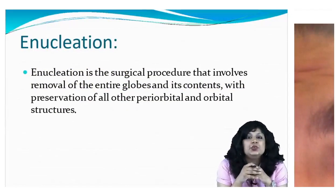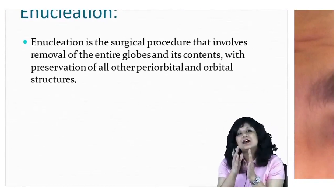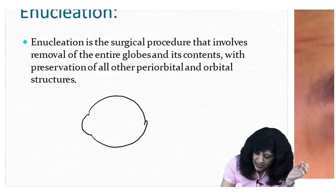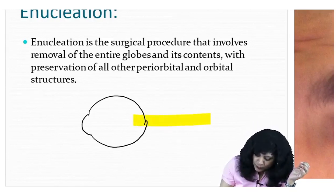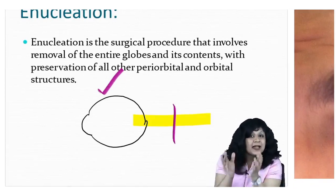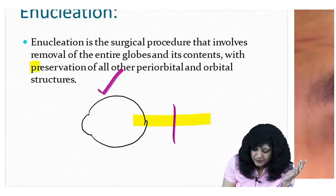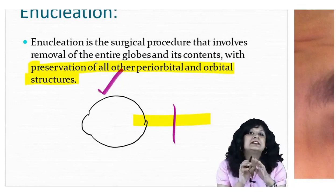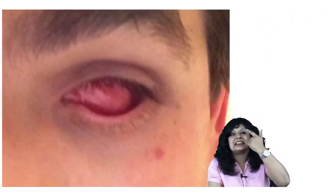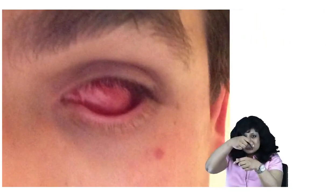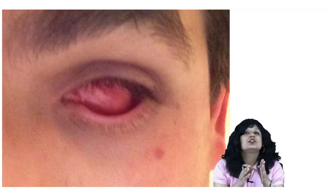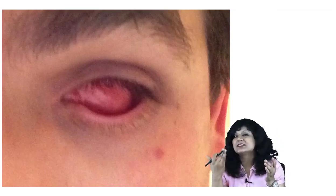Now, enucleation is a procedure where we remove the whole eyeball, cutting a part of the optic nerve, but the orbital contents remain intact — there is preservation of all periorbital and orbital structures. From the image, in evisceration you see an opening in the sclera, but in enucleation you cannot see the eyeball at all, making it easy to differentiate the two from a picture.